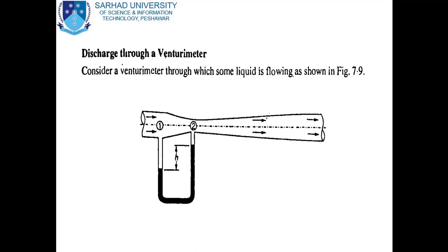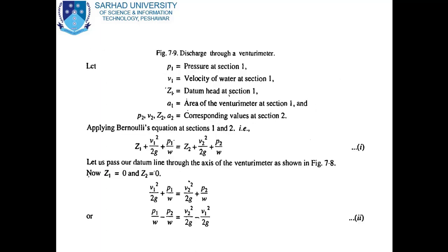Since the Venturimeter is used to find the discharge through a pipe, we now derive how discharge is measured. Consider a Venturimeter through which liquid is flowing. Let p1 be the pressure at section 1, v1 the velocity at section 1, z1 the datum head at section 1, and a1 the area at section 1. Similarly, p2, v2, z2, and a2 are the corresponding values at section 2.